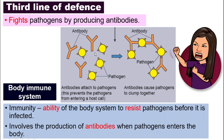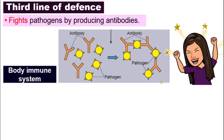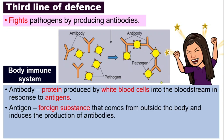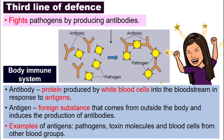This antibody is produced when pathogens enter the body. Antibody is a protein produced by white blood cells — the same cells that play an important role in the second line of defense through phagocytosis. When white blood cells sense that there are antigens in our bloodstream, they will be triggered and start producing antibodies. Antigen is a foreign substance — something our body does not recognize, the strangers, the enemies — that triggers our white blood cells to produce antibodies. Examples of antigens include pathogens, toxin molecules, and blood cells from other blood groups. That is why blood donation requires matching blood groups, so the receiver's body does not fight the donated blood.